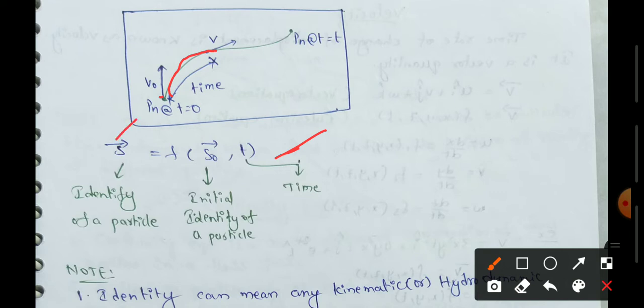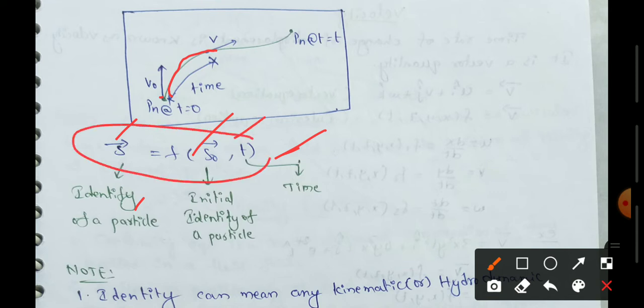Here, S-bar equals the identity of a particle, and S₀-bar equals the initial identity of a particle, while t means time. This equation represents the Lagrangian approach method.